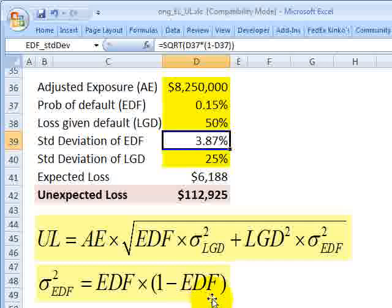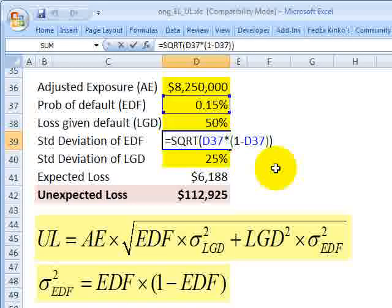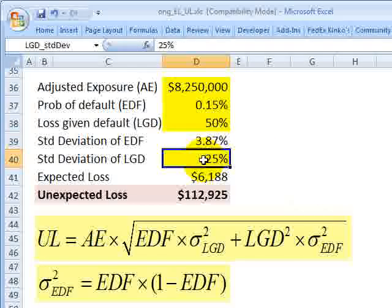So the standard deviation or variance of the expected default frequency is right here. And we can calculate that directly from the expected default frequency because default is a Bernoulli. It's either default or no. And so we can solve for it using the properties of the binomial distribution. So right here, I've got the standard deviation of the expected default frequency. I've implemented this formula here. Pretty straightforward. And I get 3.87%.